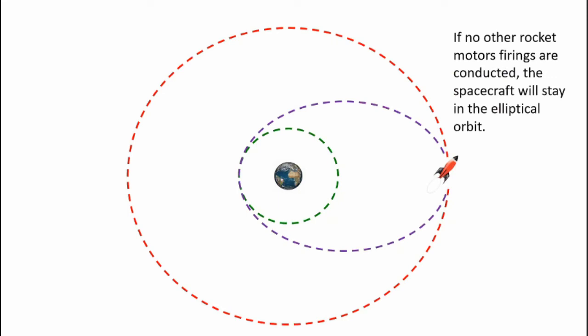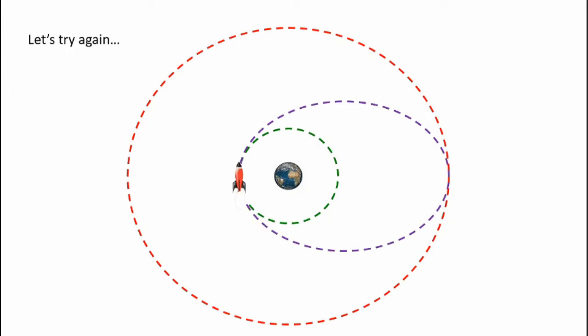Now if I don't do anything at this point the spacecraft will continue to follow along the elliptical orbit and I will not achieve the desired circular orbit at the higher altitude. Let's try this transfer again.